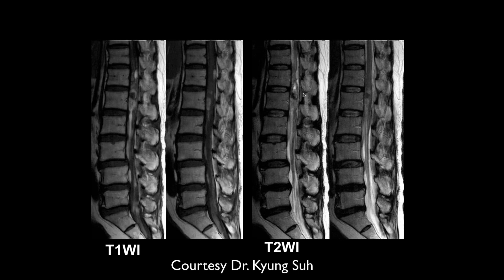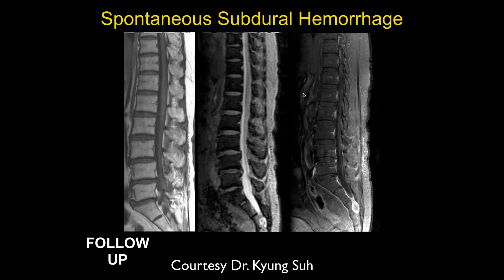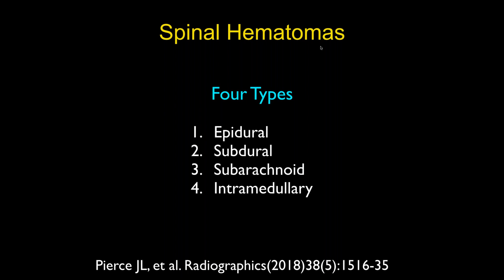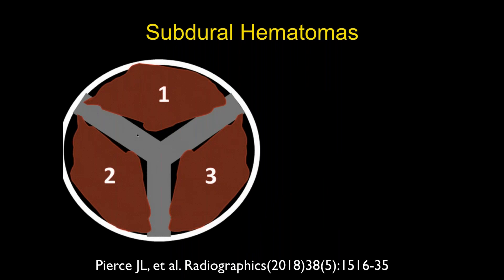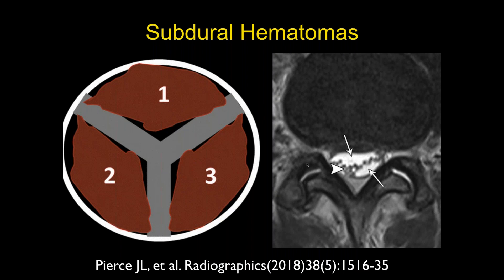This was a spontaneous subdural hematoma. For spinal hematomas, there are four types: epidural, subdural, subarachnoid, and intramedullary, involving different layers of the spine. With subdural hematomas you'll often get a triangular appearance where the blood compresses the thecal sac, resulting in a trefoil-type appearance. Here's just an example of a subdural hematoma.